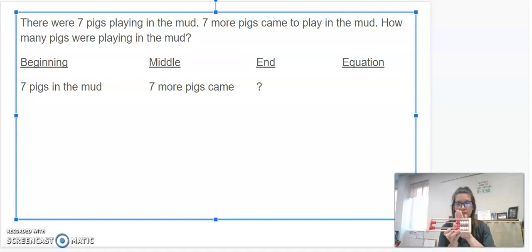I'm going to only look at the beads that I moved over to find out how many pigs were playing in the mud at the end. So, I know the top row is seven. So, I'm putting that in my head, and I'm going to count on seven, eight, nine, 10, 11, 12, 13, 14.